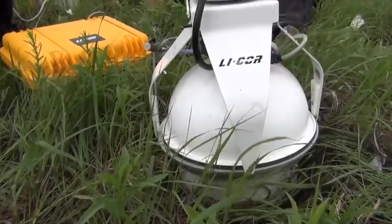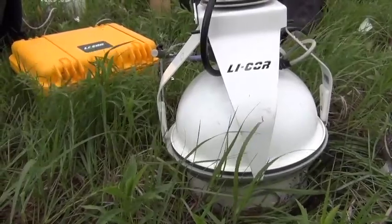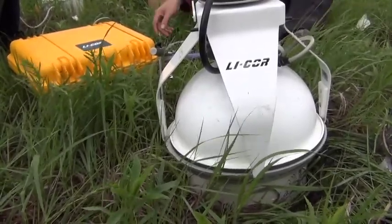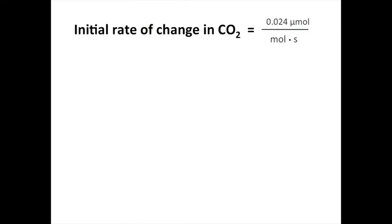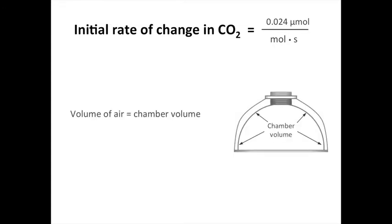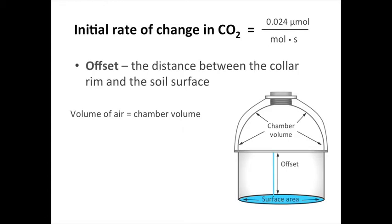Now that we've got a measurement of CO2 from our instrument, what do we do with it? The instrument is calculating the rate of change in CO2 as a mole fraction, like this. When it does this, it assumes that the volume of air we are measuring is the same as the volume of the chamber, but we have that extra space created by the collar that we have to account for. Remember when we measured the surface area and offset of our collars? We'll use those measurements now to calculate the volume of the collar and then our total volume of air.